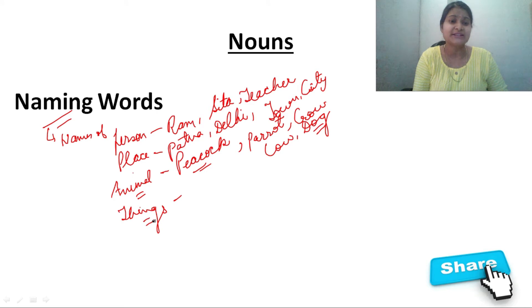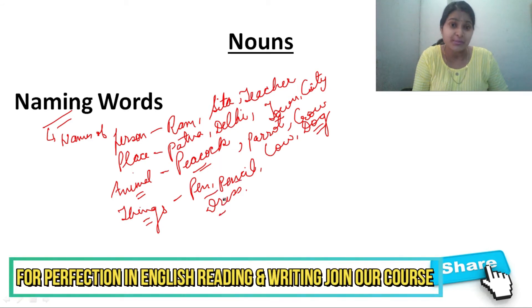Now, we come to things. Just look around yourself and see the things around yourself. What will you see? You will see pen. You will be able to see pencil. You will be able to see your dress. So what are these things? These things are also naming words. These are also called noun.